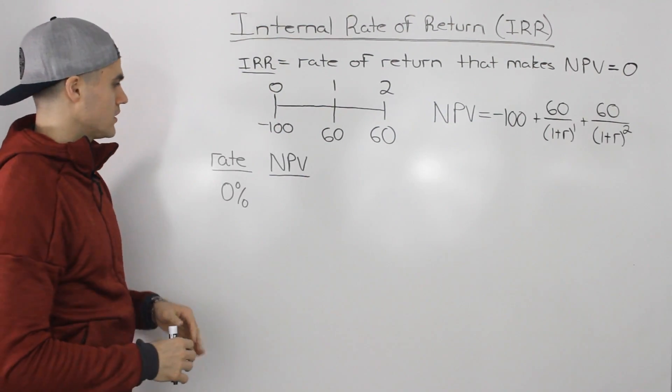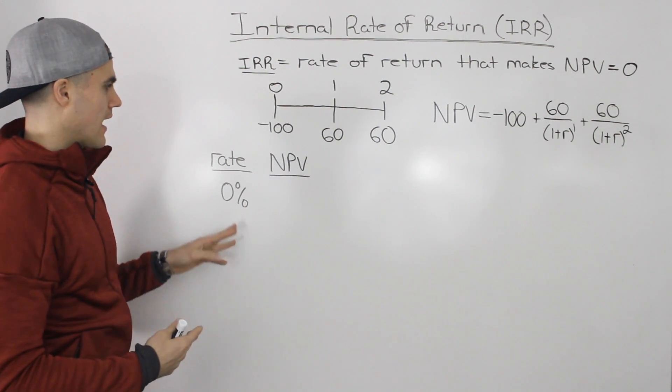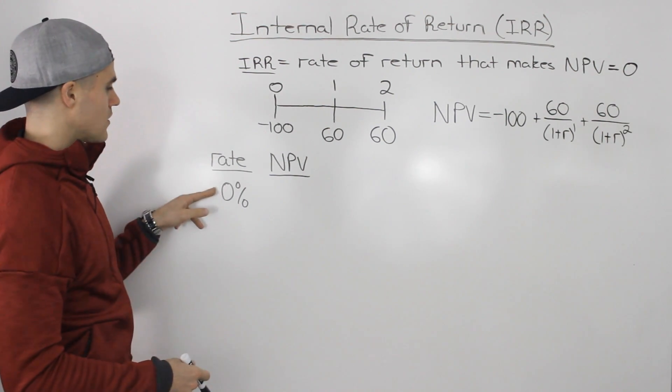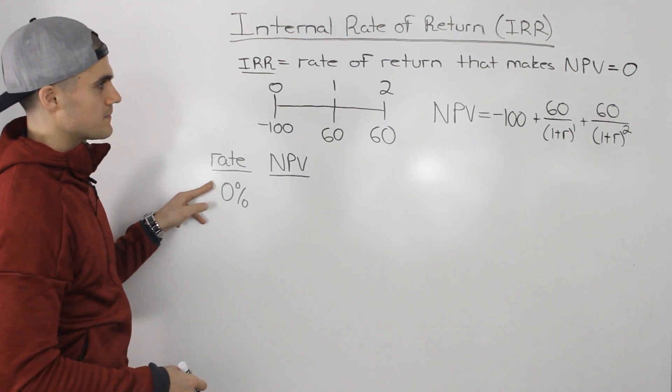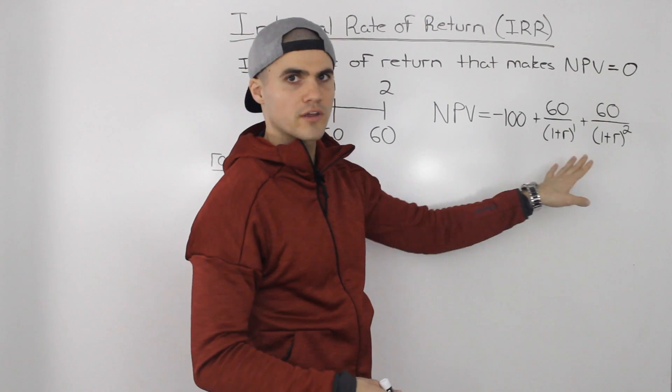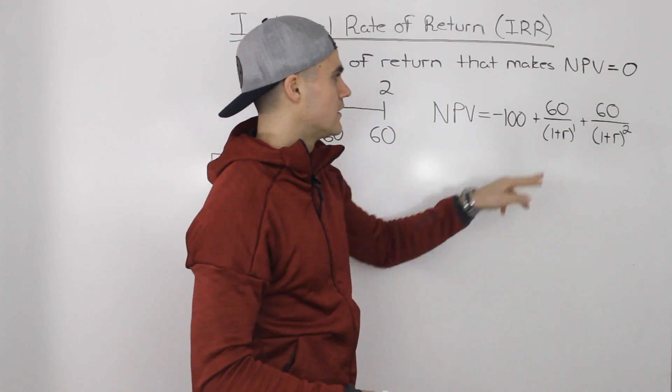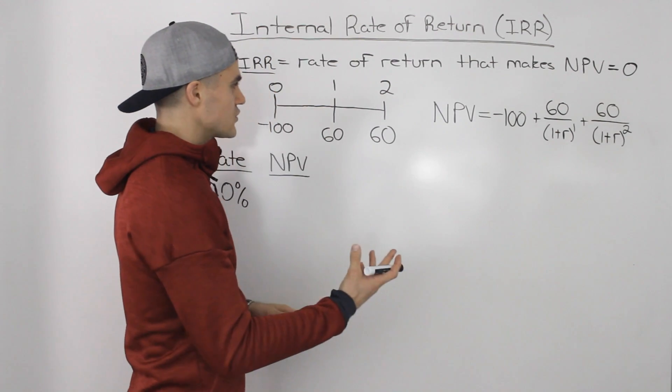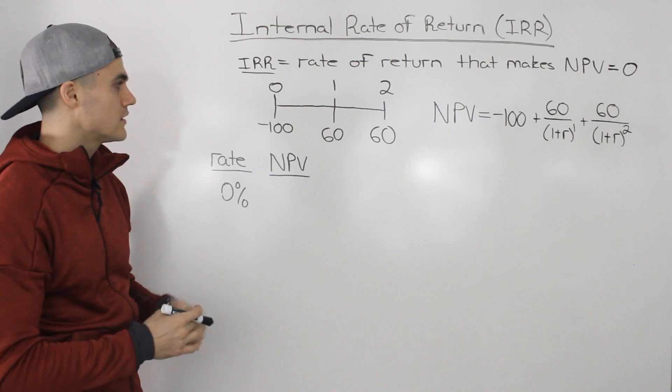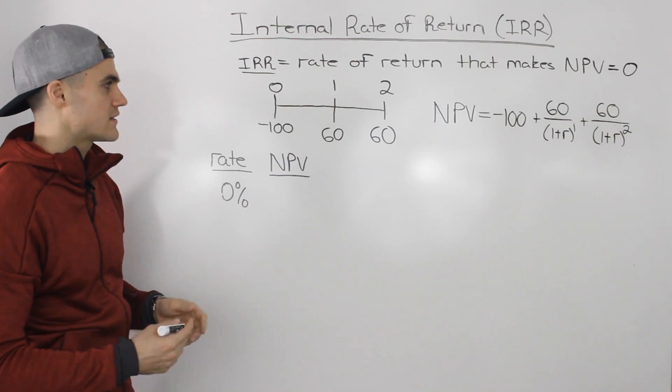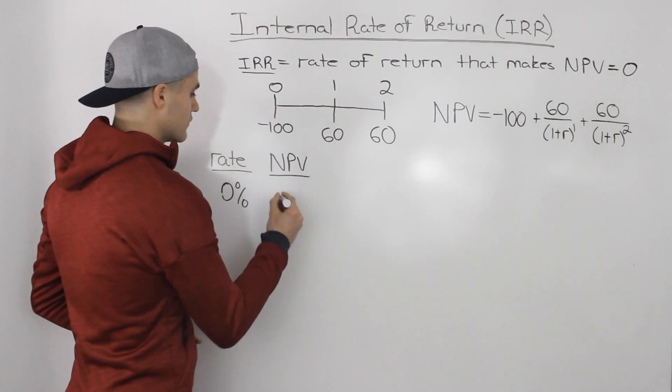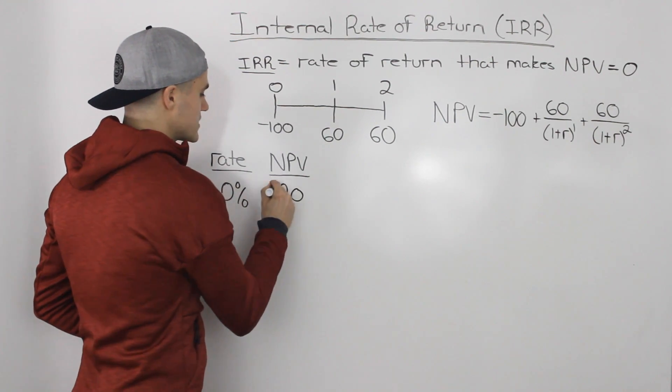So now what I'm going to do is I'm going to take a bunch of different discount rates and then see what the project's NPV is going to be. So I'm going to start with zero percent. Now if the rate is zero percent, notice how the denominators in all cases will always be one. So the NPV is just going to be the cash flows without any time value because the rate is zero percent, time value is irrelevant. So you could just net out the cash flows as they are to get the NPV. So it'd be negative $100 plus $60 plus $60. That would give us a positive NPV value of $20.